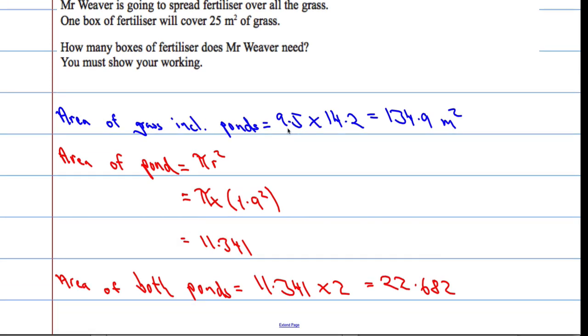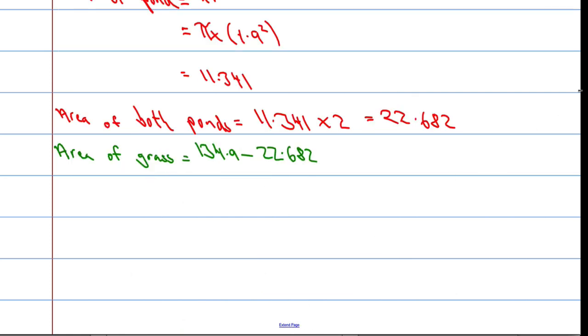So now I know the area of the grass with the ponds, I know the area of the ponds, if only I can get the area of the grass. The area of the grass will be 134.9 take away 22.682. By the way, that was also in meters squared.